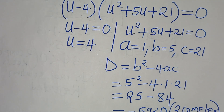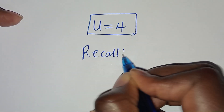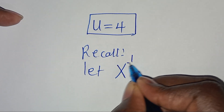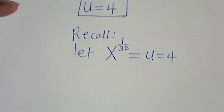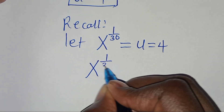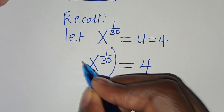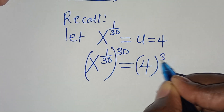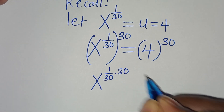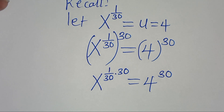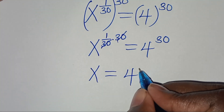So we focus on u equals 4. Recalling that we let x to the power of 1 over 30 equal u, and u equals 4, we have x to the power of 1 over 30 equals 4. Raising both sides to the power of 30, x equals 4 to the power of 30.